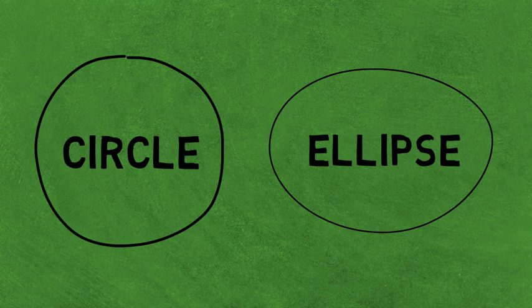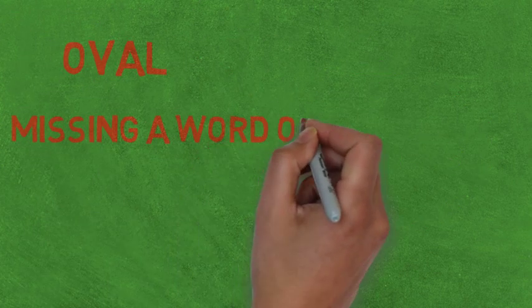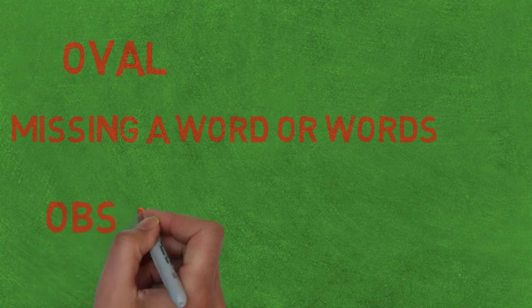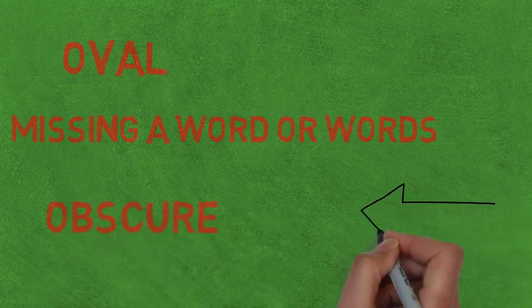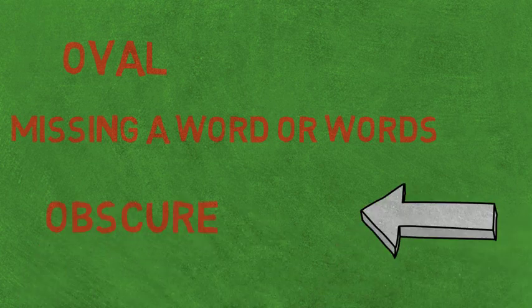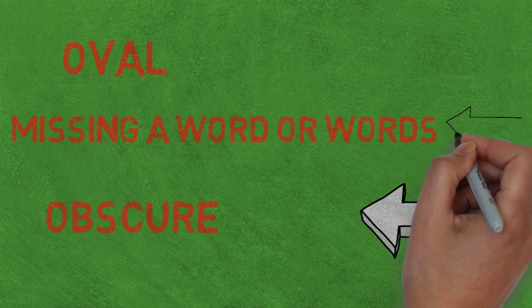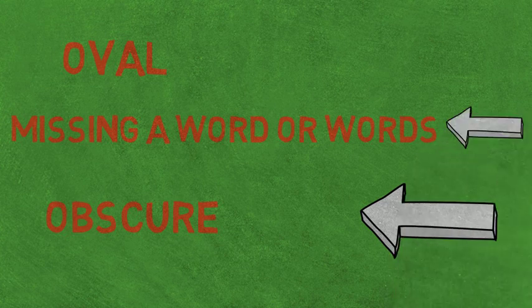Elliptical is an interesting word with lots of meanings. It can mean oval, missing a word or words, or obscure. Depending on the situation and the context it is used in, elliptical can have a variety of implications.